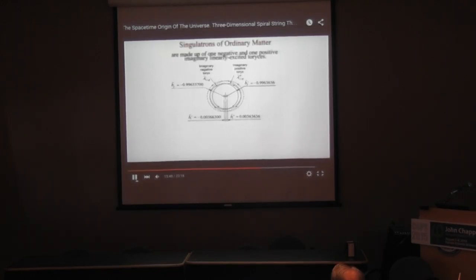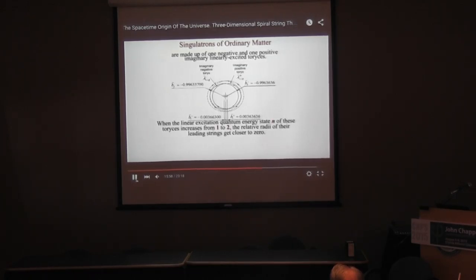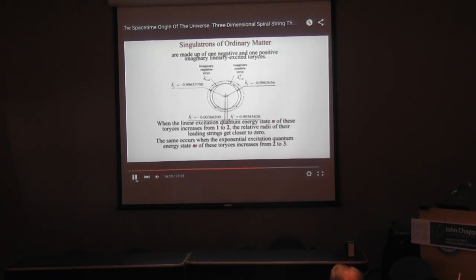Cingulatrons of ordinary matter are made up of one negative and one positive imaginary linearly excited Torex. When the linear excitation quantum energy state M of these Torexes increases from 1 to 2, the relative radii of their leading strings get closer to 0. The same occurs when M increases from 2 to 3, and at the same time the cingulatron mass increases about 137 times.